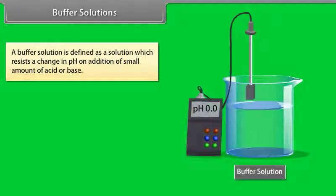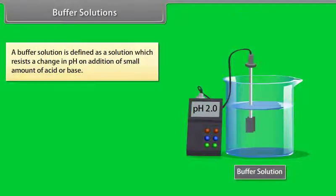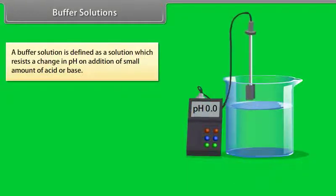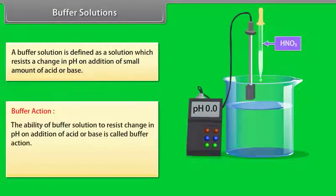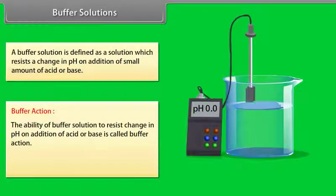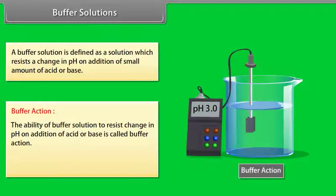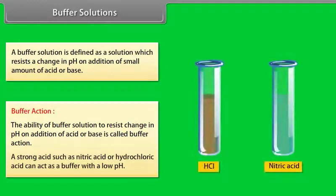A buffer solution is defined as a solution which resists a change in pH on addition of a small amount of acid or base. The ability of a buffer solution to resist this change is called buffer action. A strong acid such as nitric acid or hydrochloric acid can act as a buffer with a low pH.